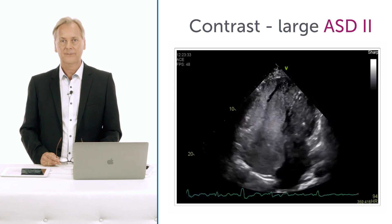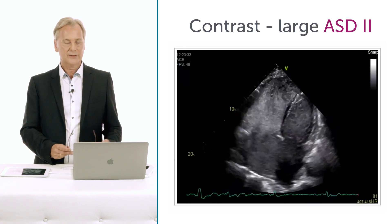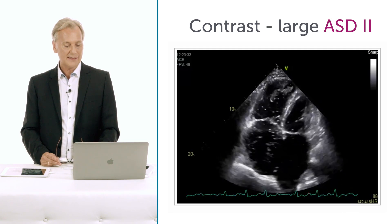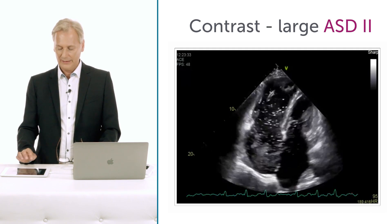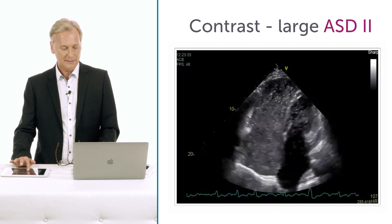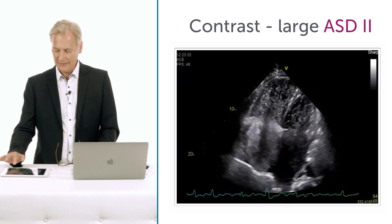Another important modality you can use with transthoracic echo is contrast. Here is a transthoracic study where we injected the contrast into the peripheral vein.